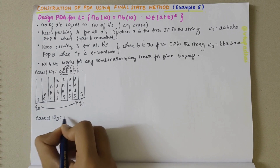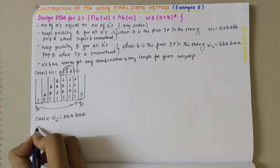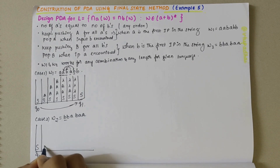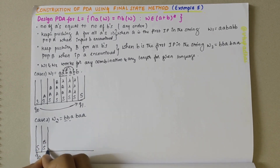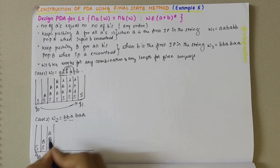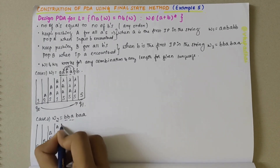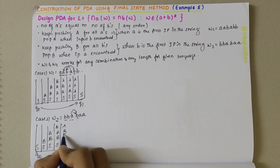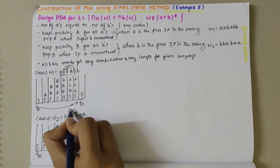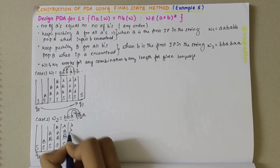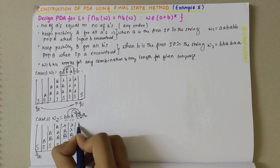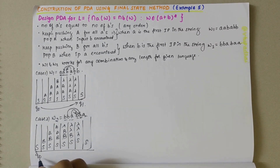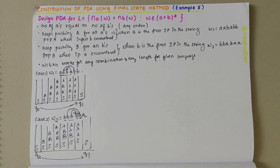For the second string w2, B B A B A A: initially in Q0 state with empty stack. When B is encountered, push B; again B is encountered, push B. Now A is encountered — push A. Then this B pops for this A, putting lambda. When the next A is encountered, it pops for the next B. Finally the last A pops the final B. The stack is empty and the state changes from Q0 to Q1.